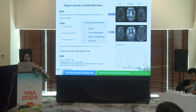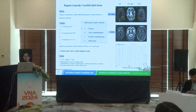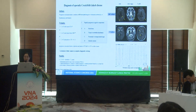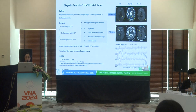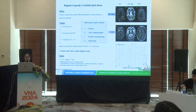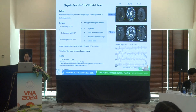This slide shows the diagnostic criteria for sporadic Creutzfeldt-Jakob disease: definite, probable, and possible. Definite diagnosis requires progressive neuropsychiatric syndrome with neuropathological, immunohistochemical, or biochemical confirmation. Probable diagnosis requires one symptom from two symptom groups, with typical EEG or brain MRI, positive CSF 14-3-3, progressive neuropsychiatric syndrome, and positive RT-QuIC in CSF.